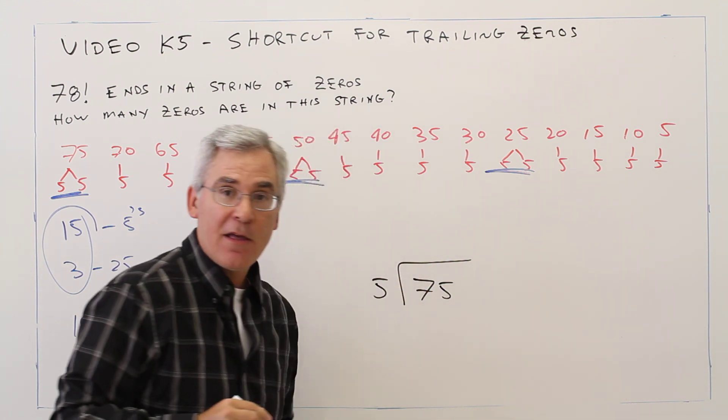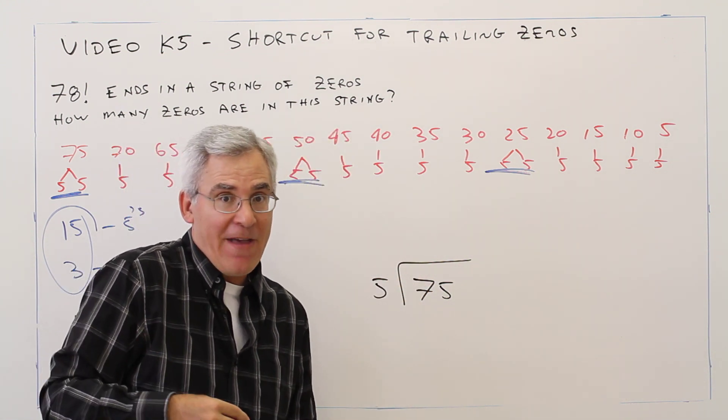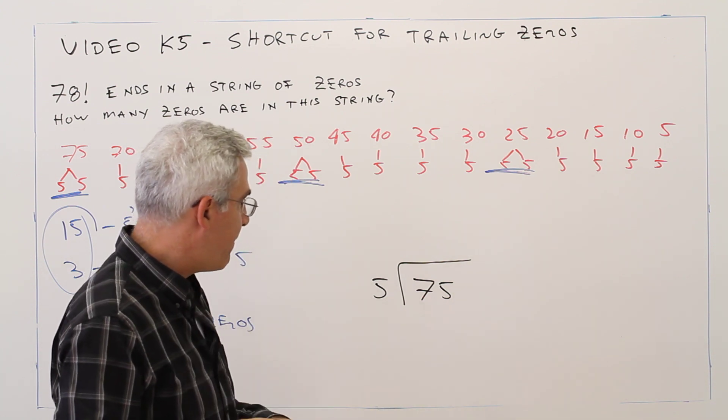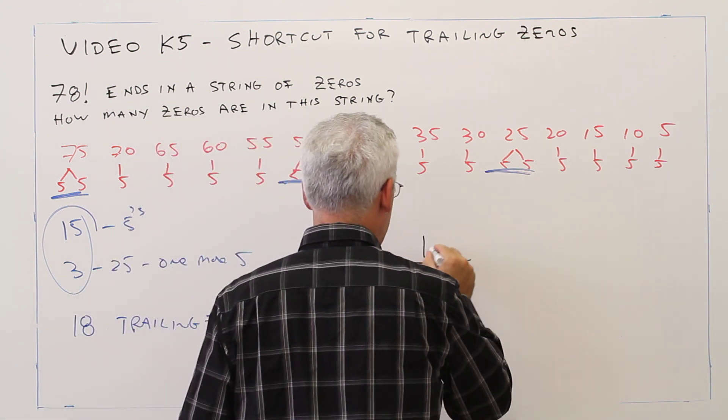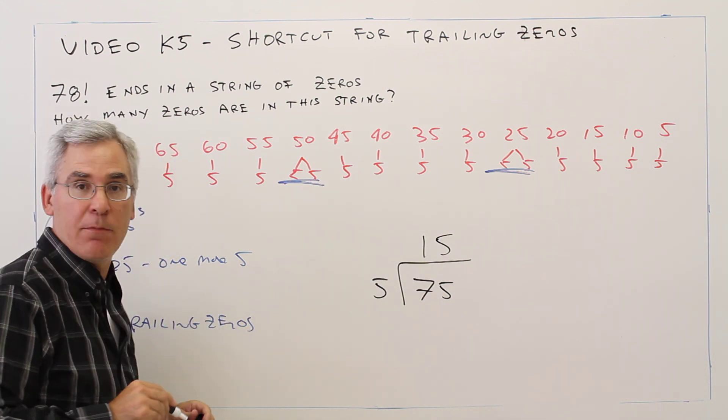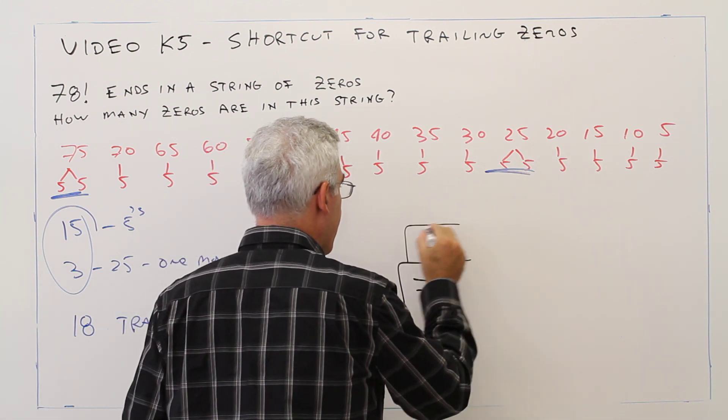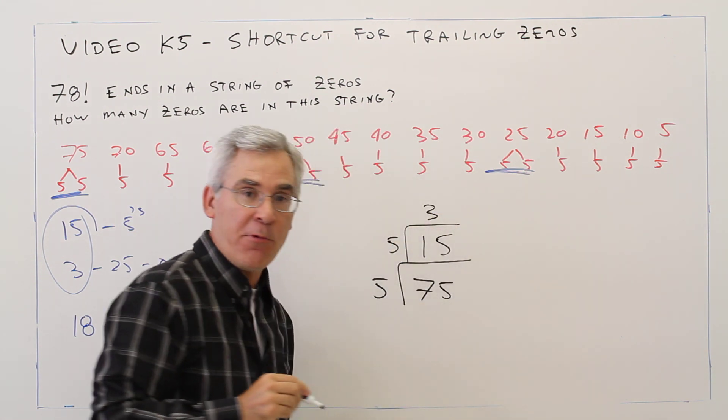75. I'm going to divide it by 5 to see how many factors of 5 there are. It goes in there 15 times. Oh, those were my 15 numbers that had a factor of 5.